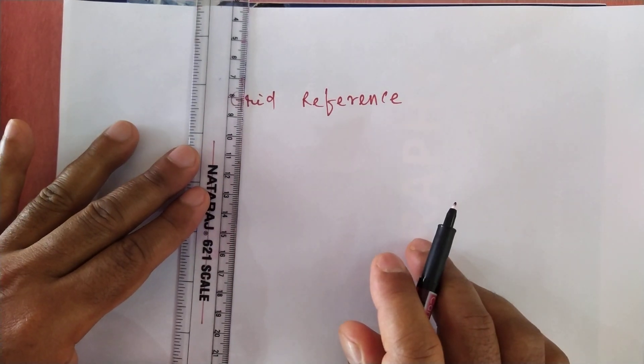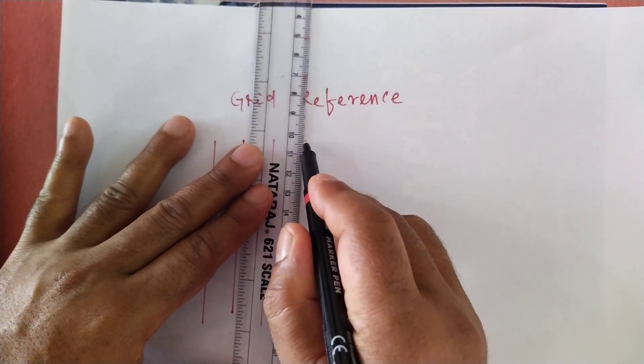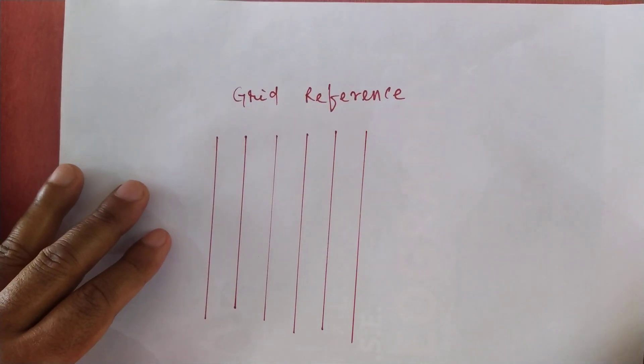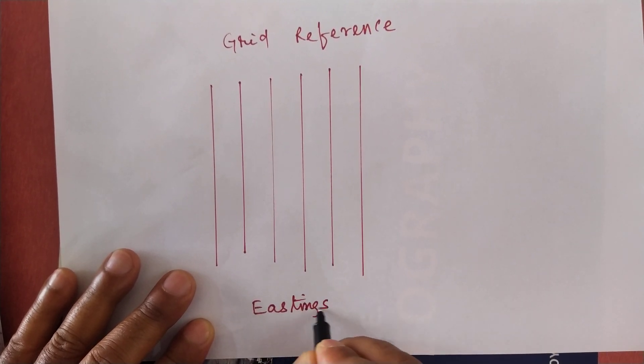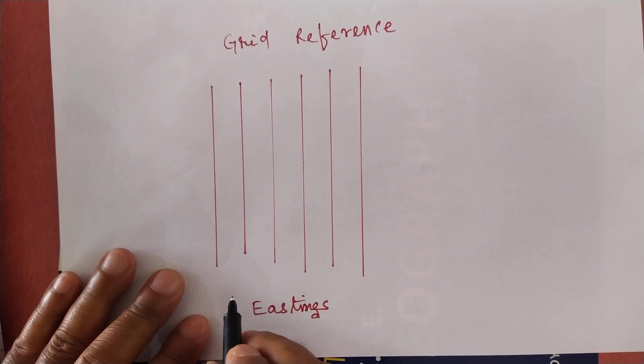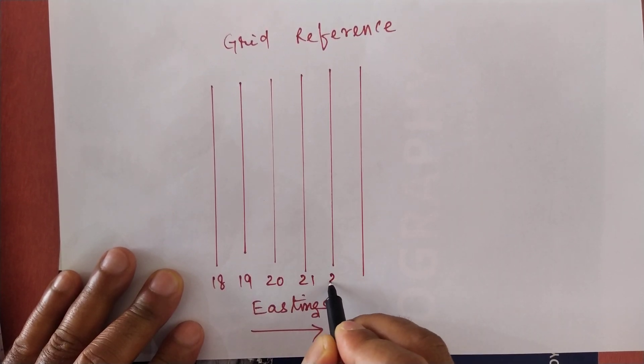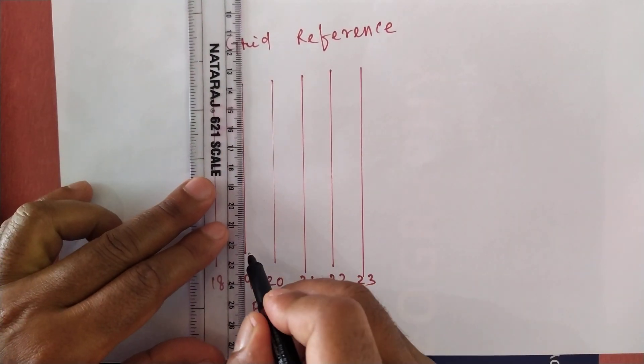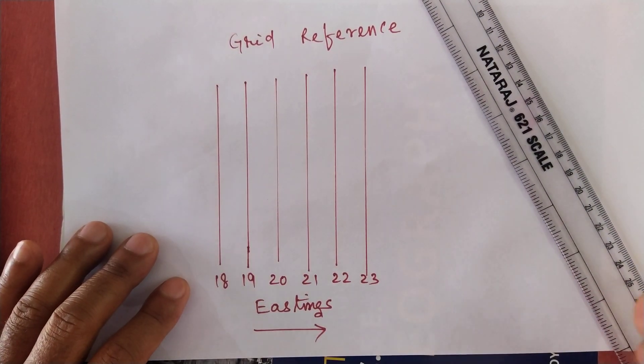The lines which are drawn vertically on the topper sheet, from north to south, are known as Eastings. The numbers will be increasing towards the East side: 18, 19, 20, 21, 22, 23. You see the lines which are drawn vertically and they are increasing the numbers towards the East side.